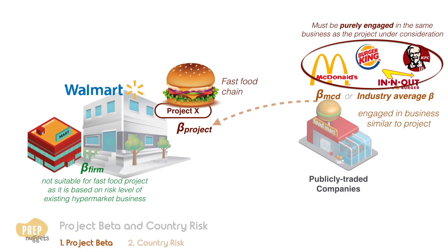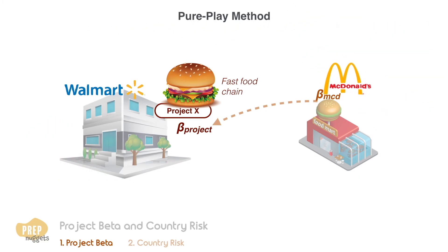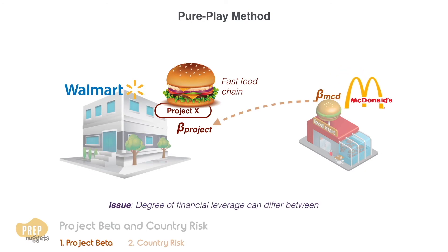Thus, using the beta of a conglomerate that is engaged in the same business as the project would be inappropriate, because its beta depends on its many different lines of business. This is why this method is called the pure play method. Another important consideration is that the degree of financial leverage can differ significantly between firms, and the beta of a firm is a function of it.